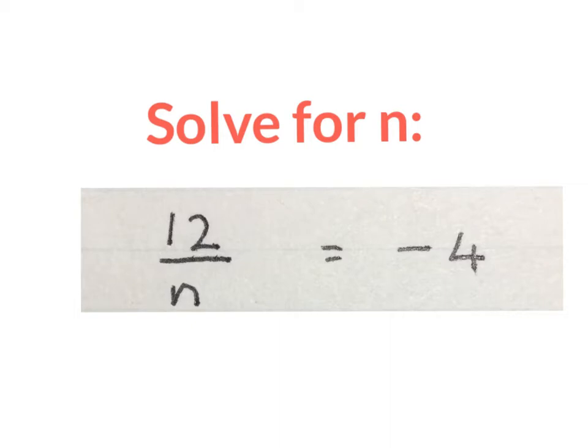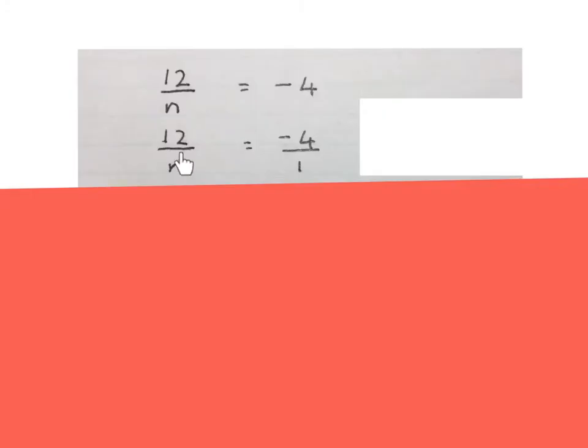This is an equation with fractions because there is a fraction in the equation. First we make everything fractions. So we have 12 over n equals minus 4 over 1. Everything is fractions. We are going to get rid of the fractions.